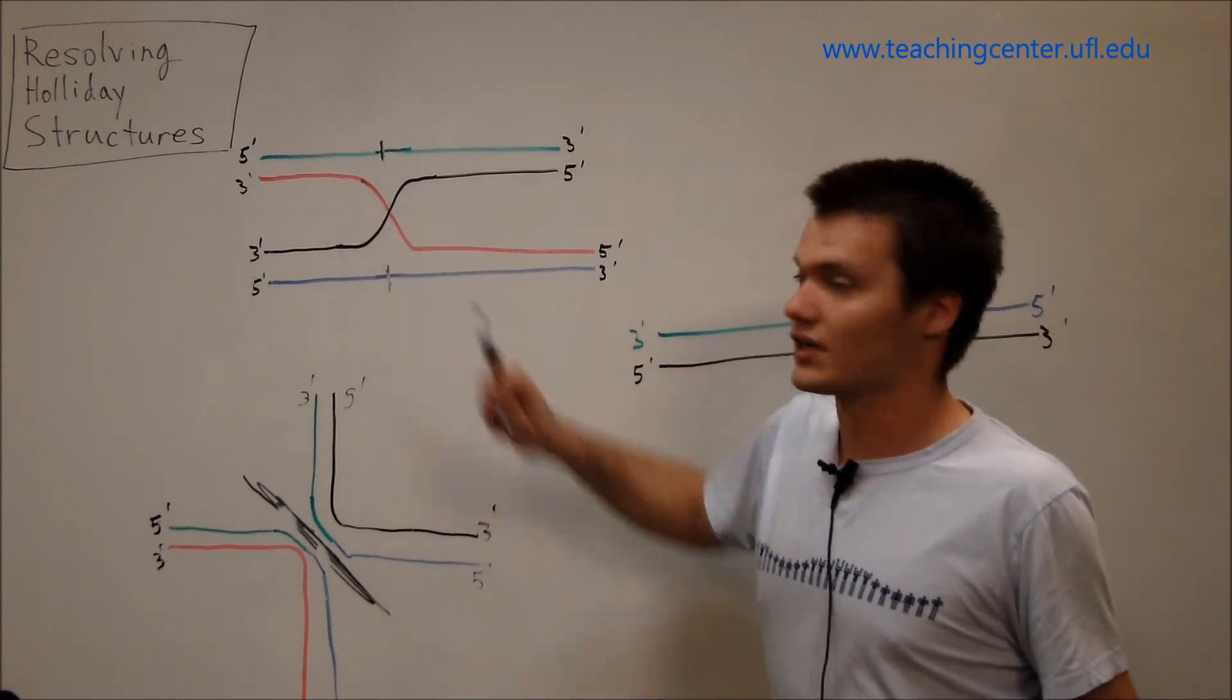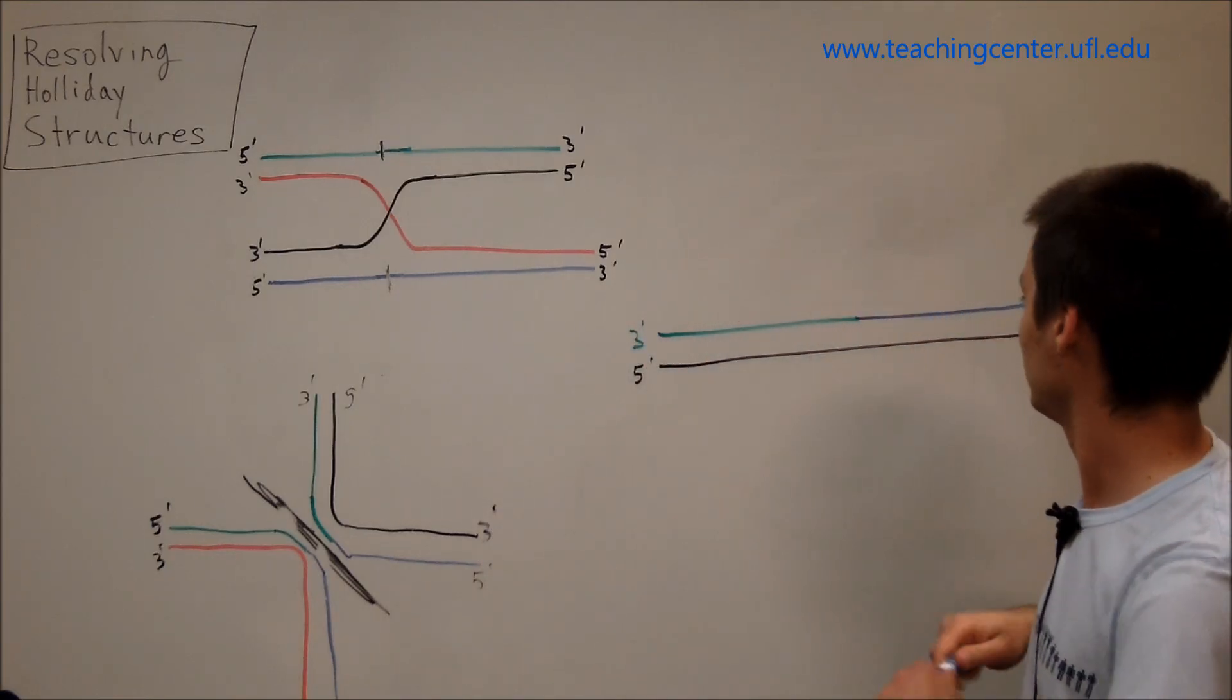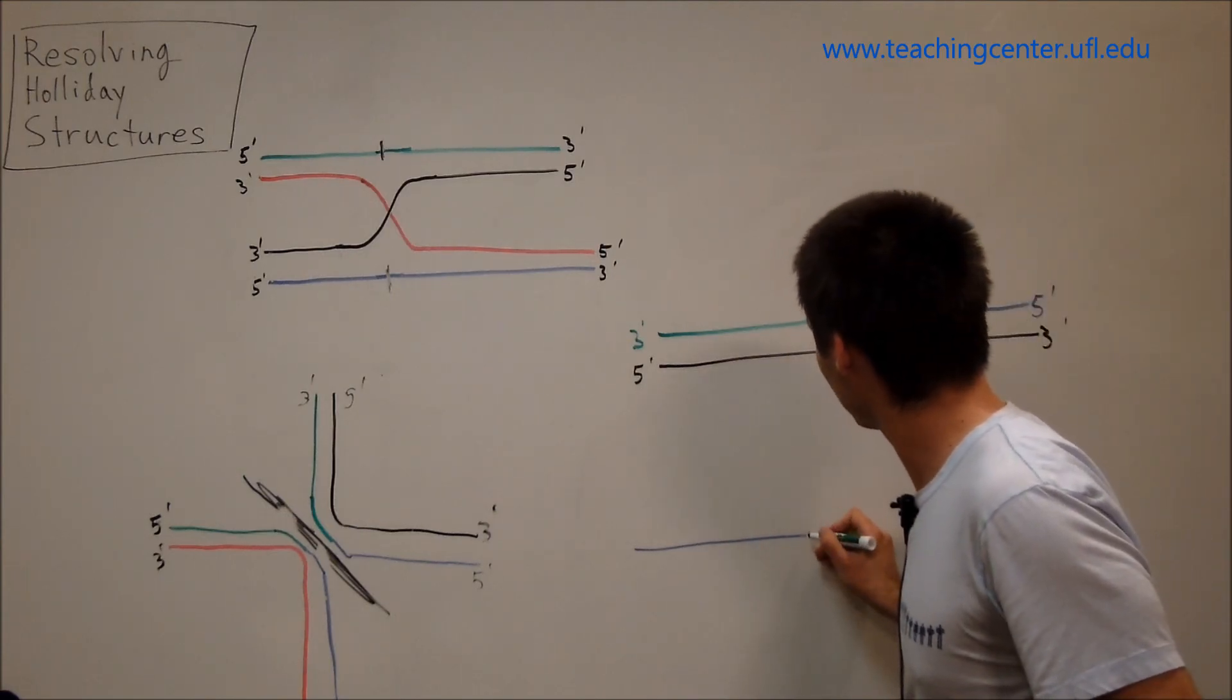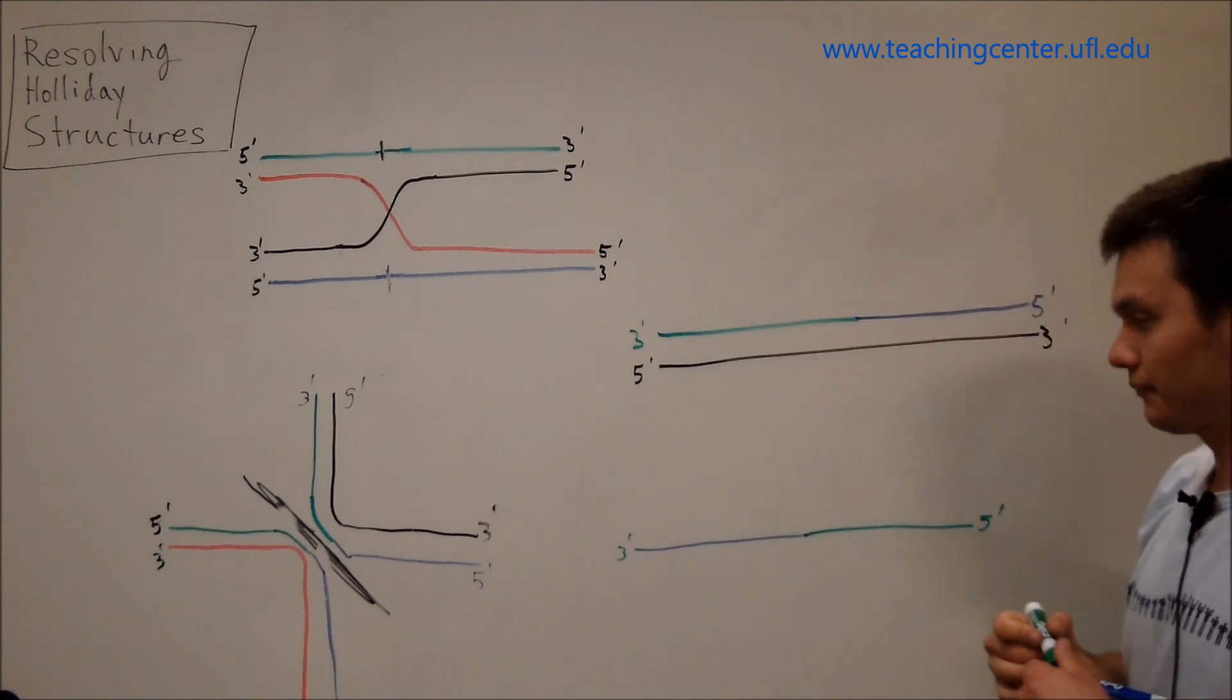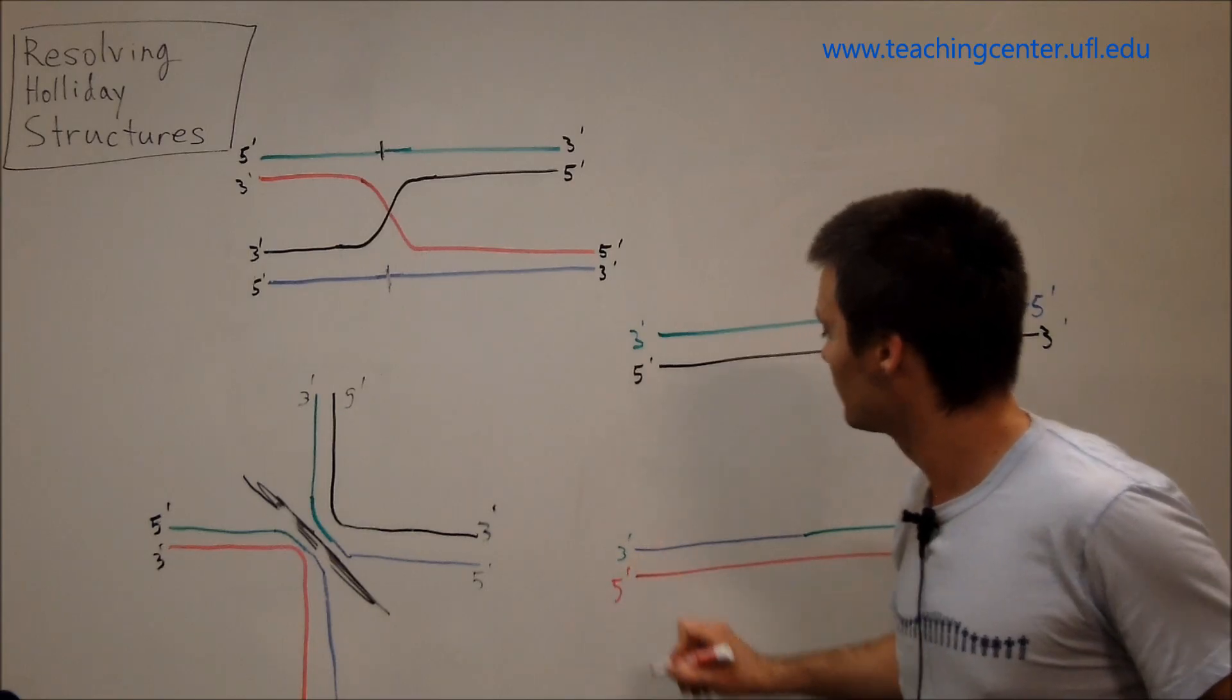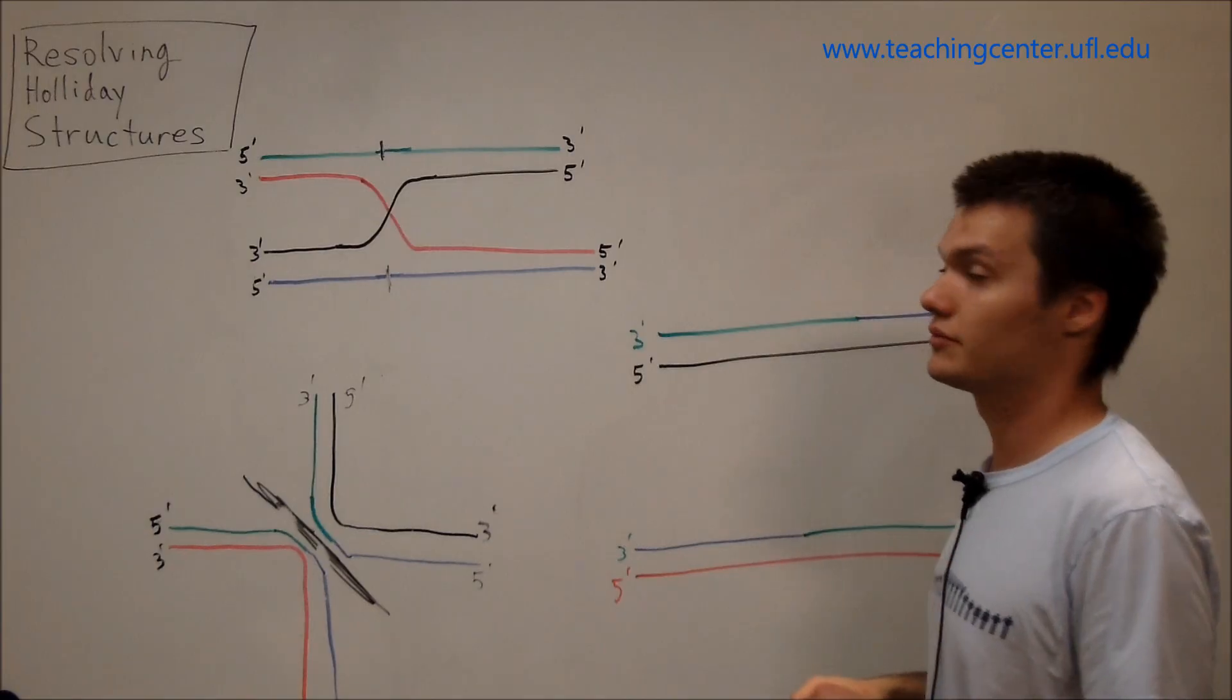And now, let's do this top cut here. So, we have our three prime end of our blue strand. And our five prime end of our green strand. Five prime, three prime. And that's going to pair with our red strand. So, how is this different from just switching these around? Well, it wouldn't be.